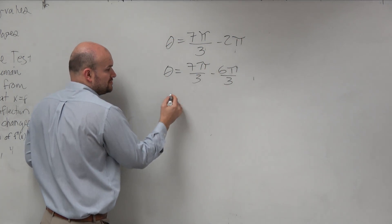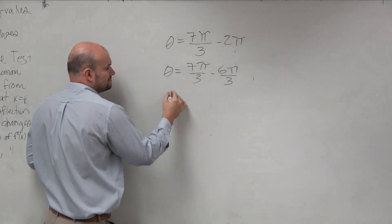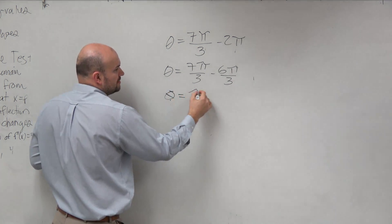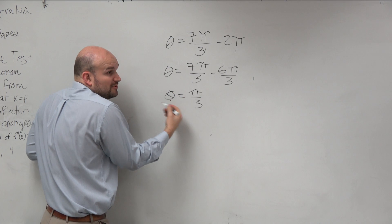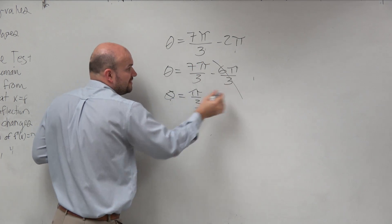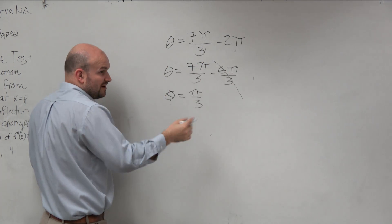Because by subtracting a revolution, I'm now left with θ equals π over 3. Which is now I got rid of the extra fluff, right? The revolution.